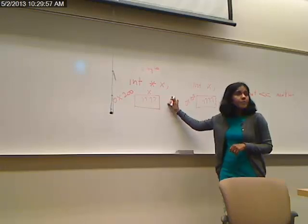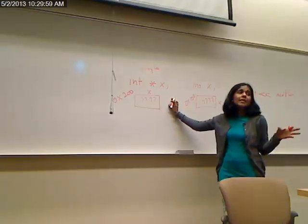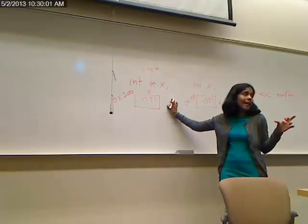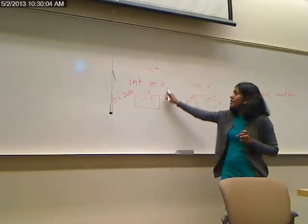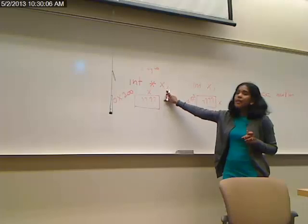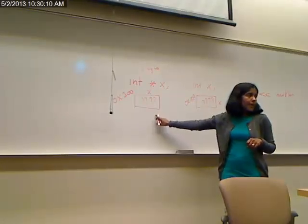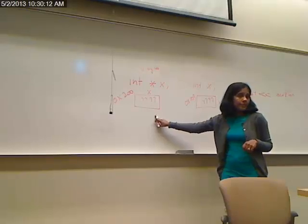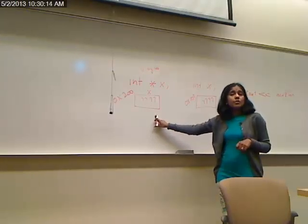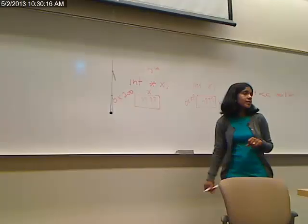So a pointer is nothing but a data type. Memory gets allocated for it. The amount of memory that gets allocated is as long as the address because it's going to hold an address. And when we don't allocate anything to it and when we simply create it and not initialize it, it is essentially a null pointer. It's a bad pointer. It's not pointing to anything.